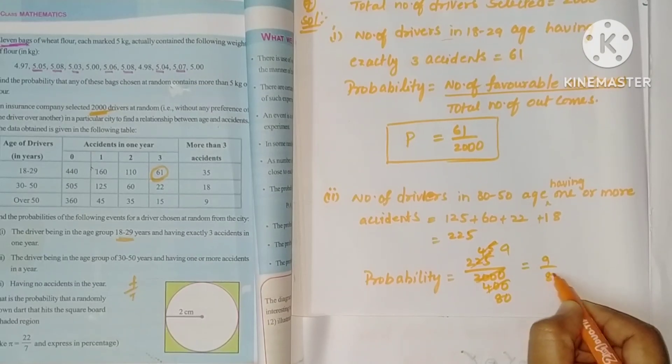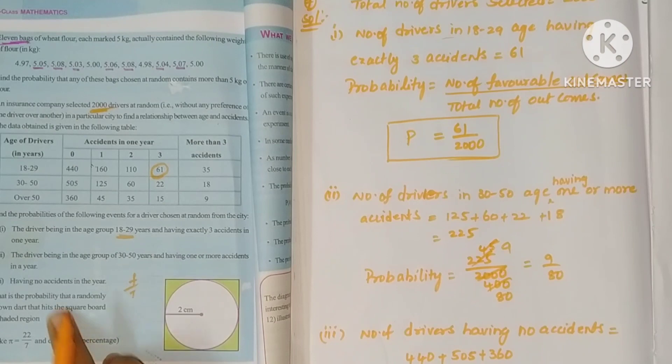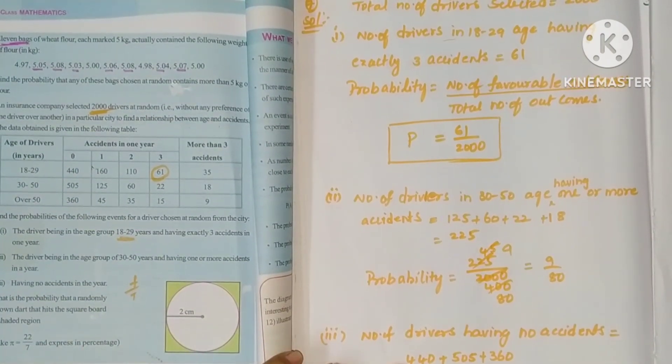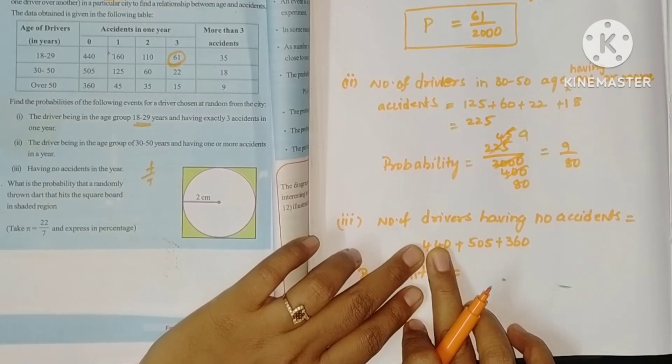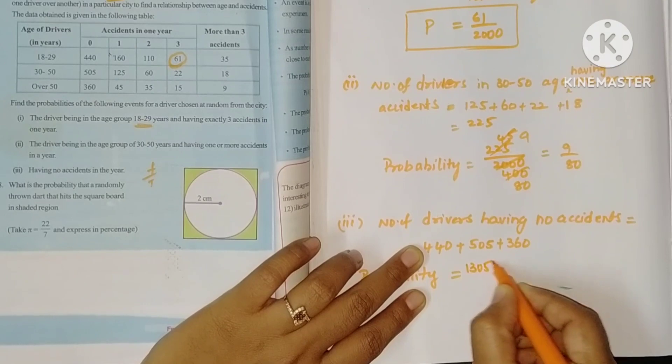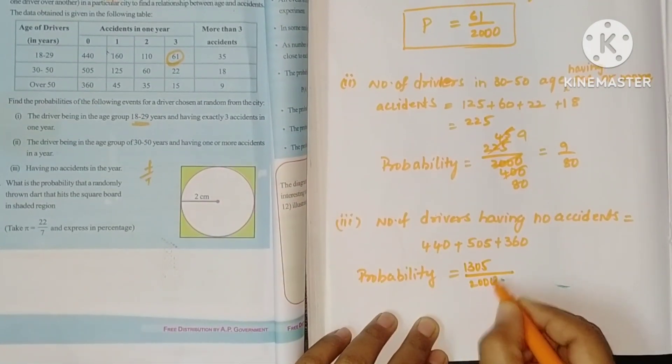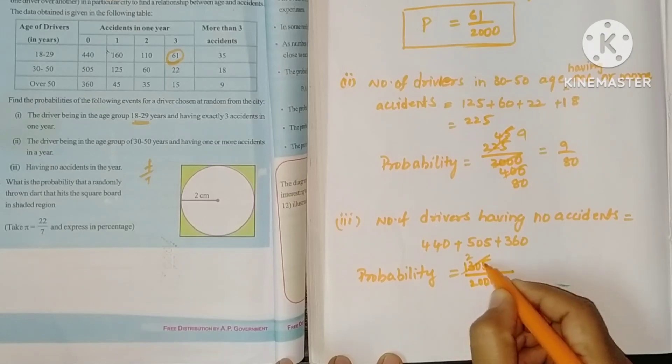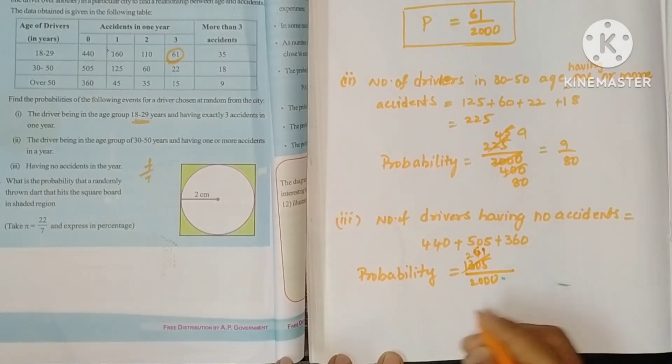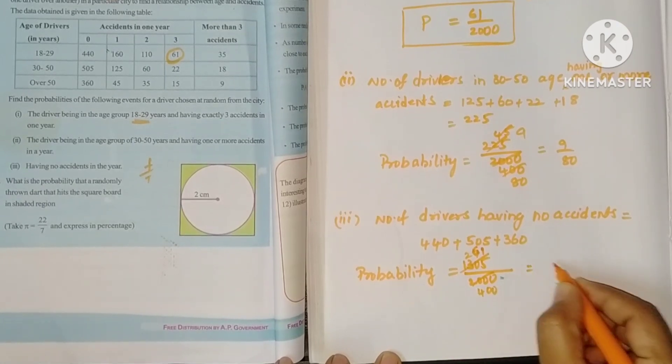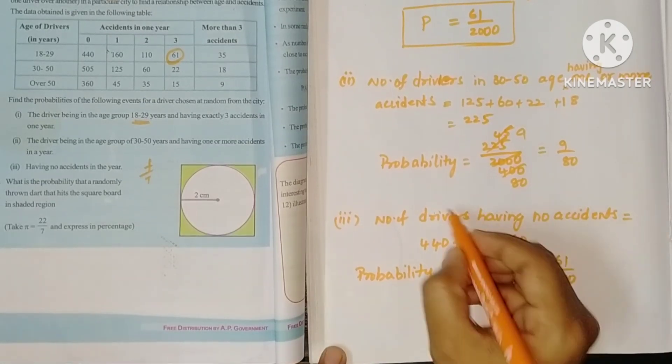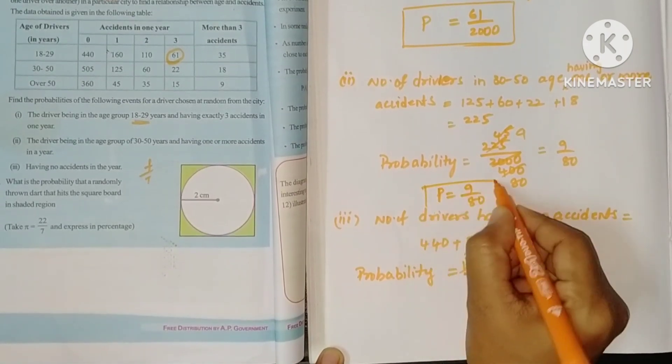Next, last one: Having no accidents in the year. This column, all added up: 360 plus 440 is 800, 805, 813. So it's 1305 by total 2000. We can cancel with 5: 261 by 400.